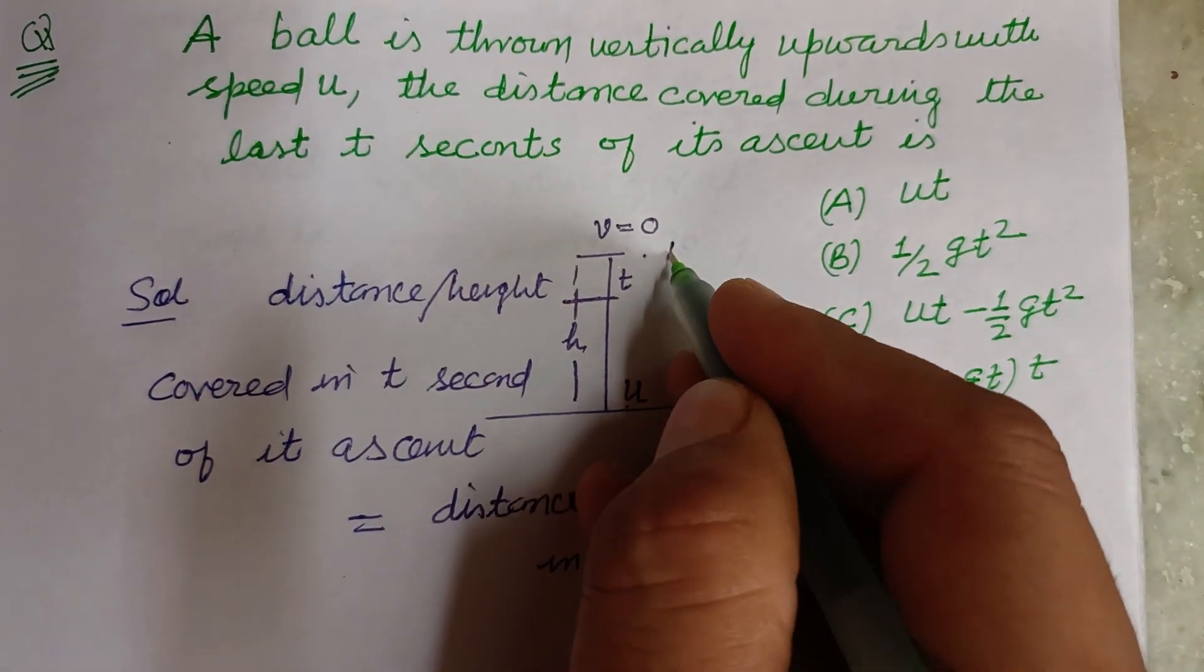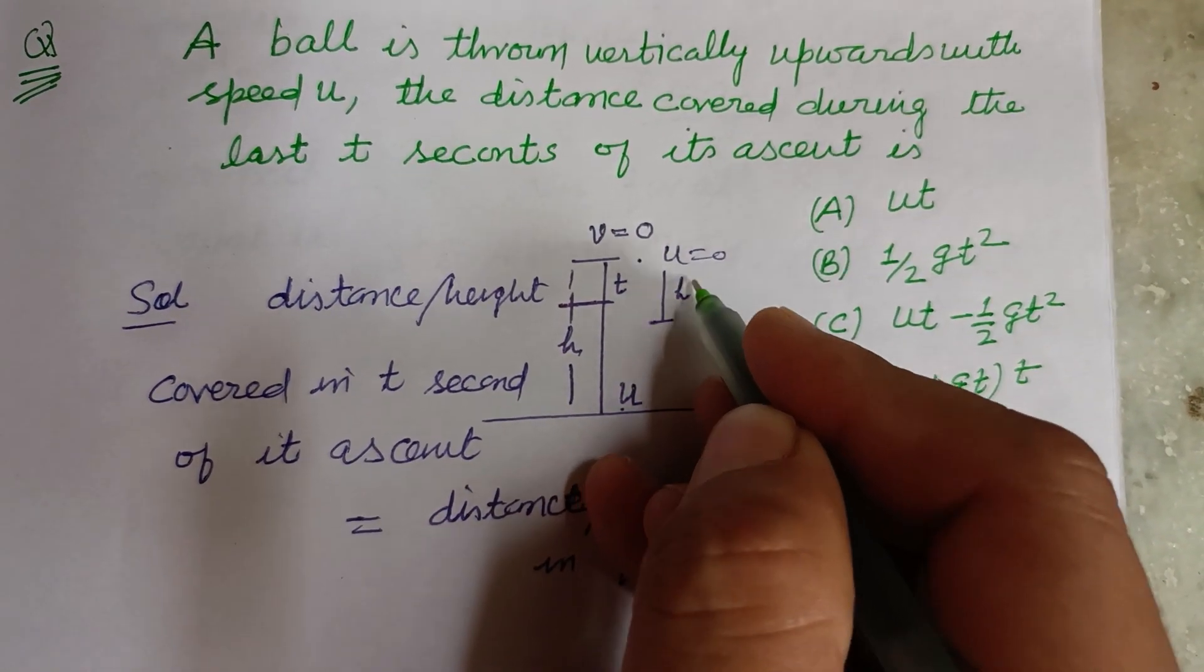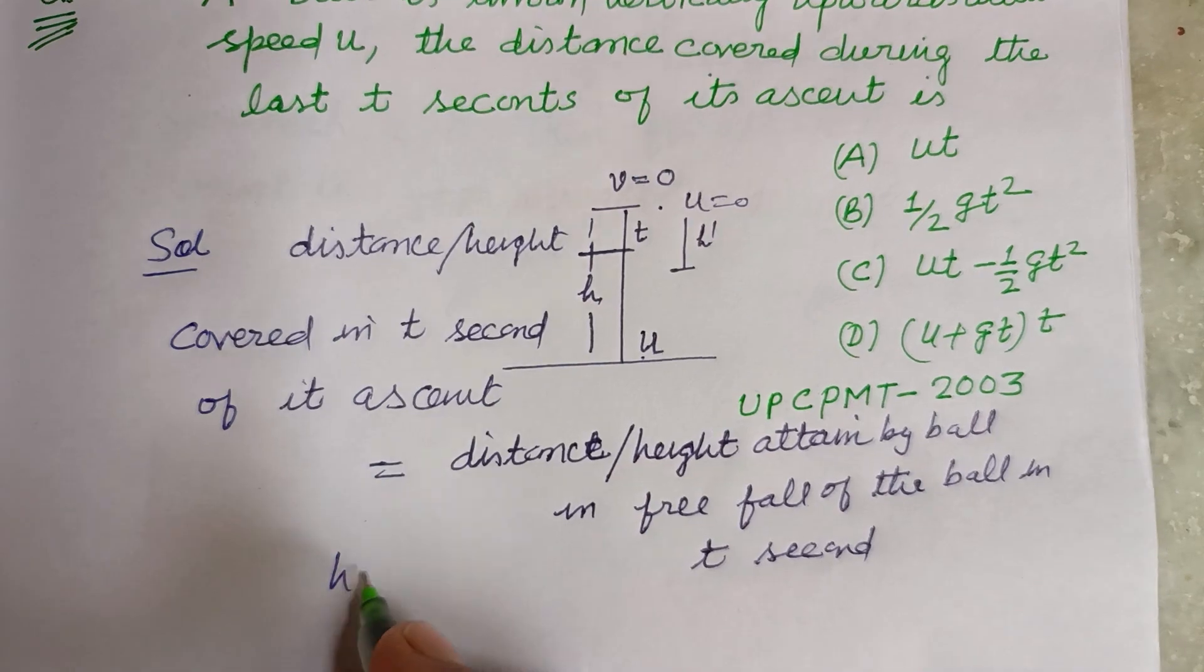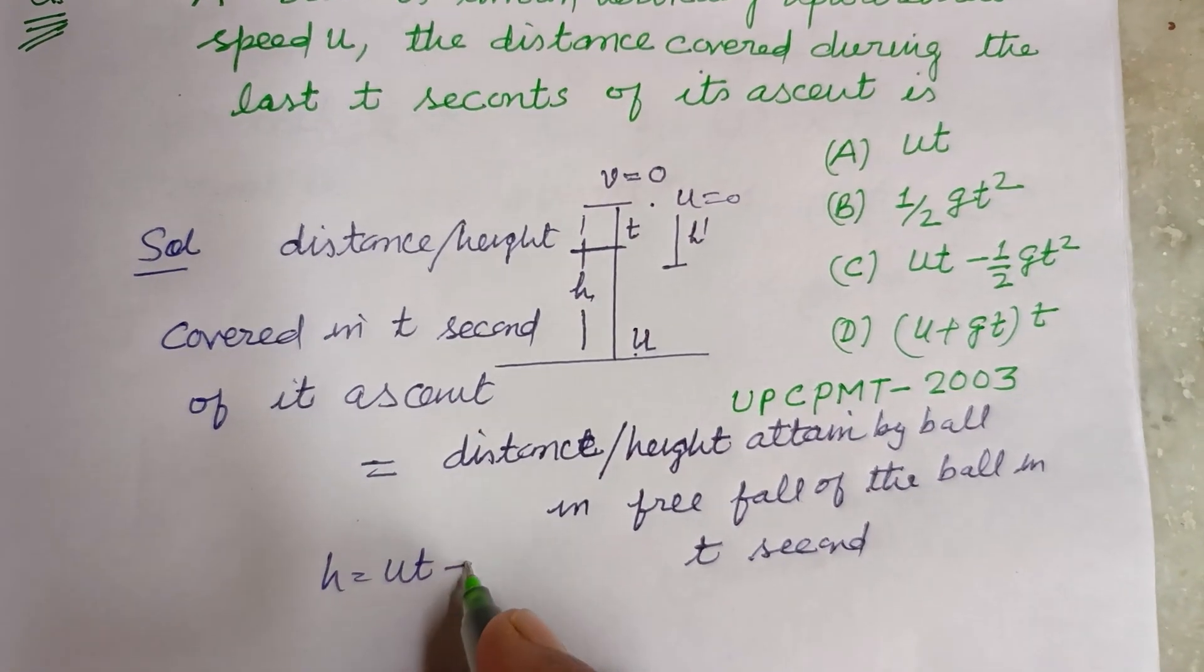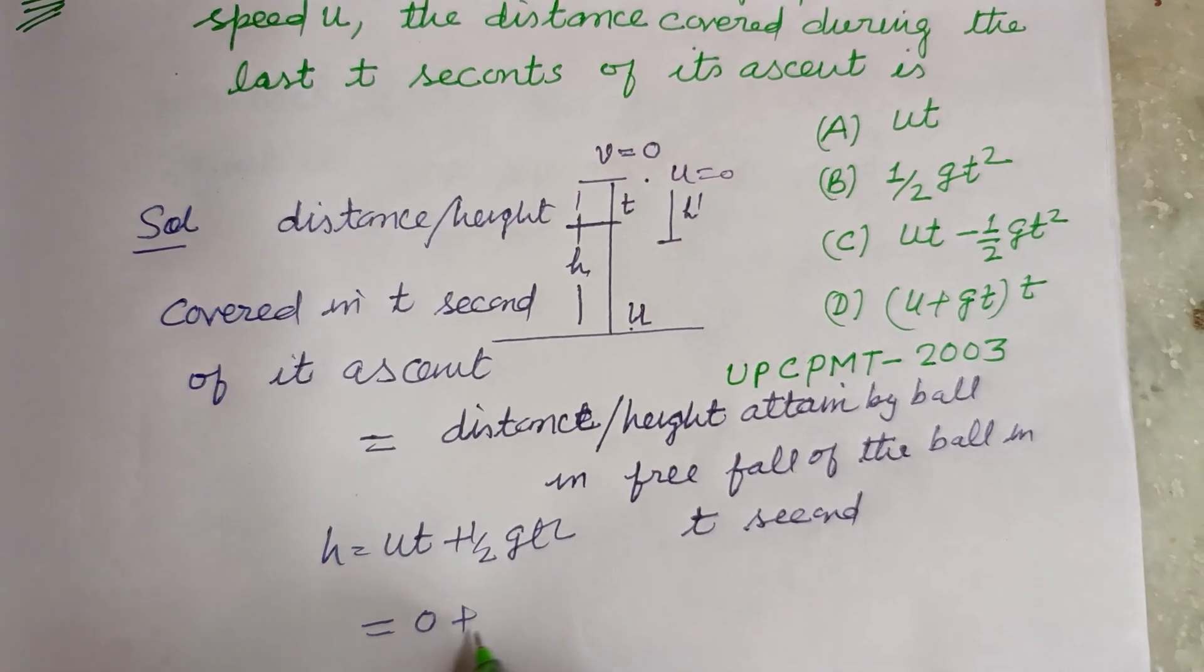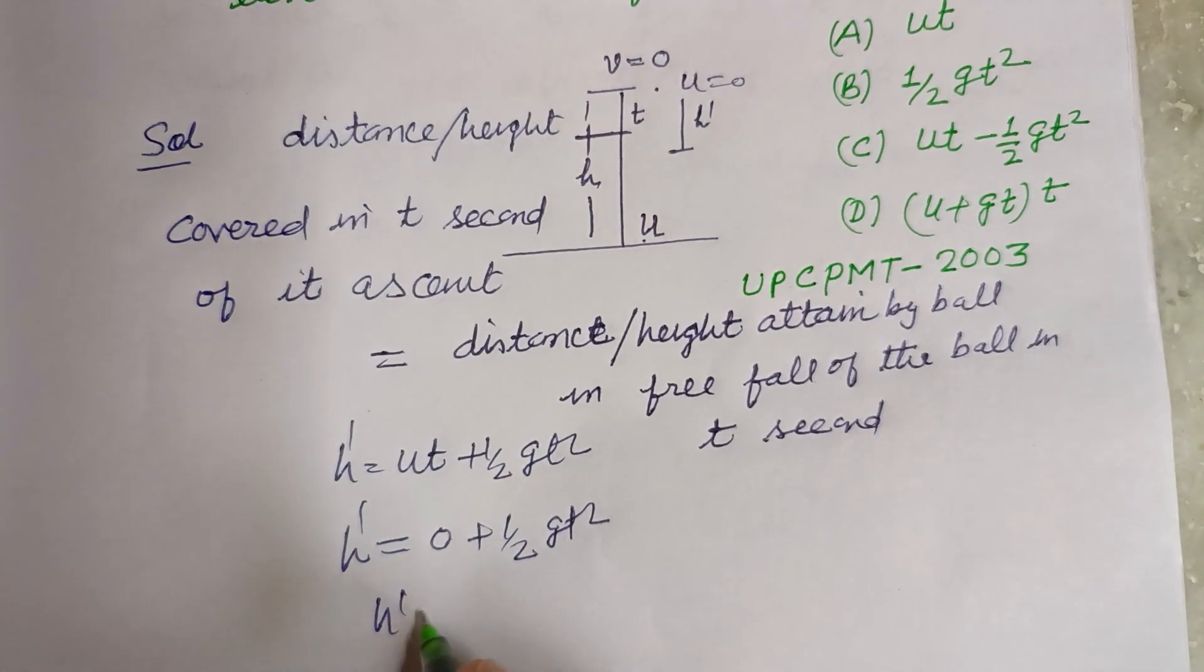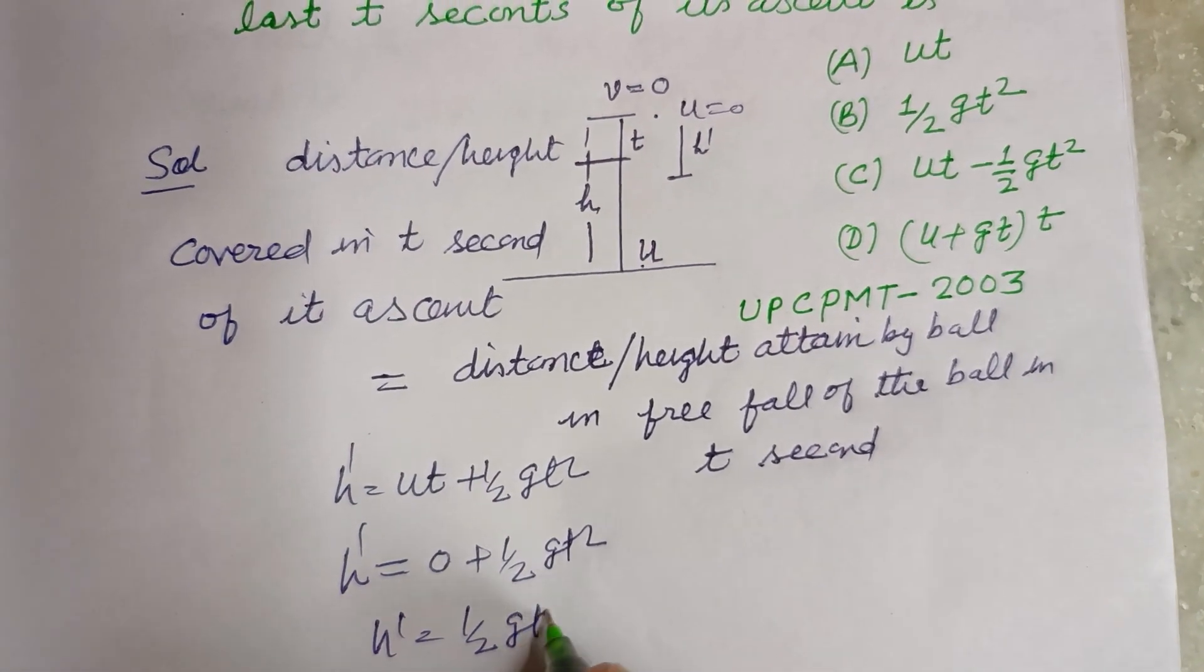So from here, u is equal to zero. Distance covered in t seconds is h dash, so h dash equals ut plus half gt squared. Here u is zero, plus half gt squared, so h dash equals half gt squared.